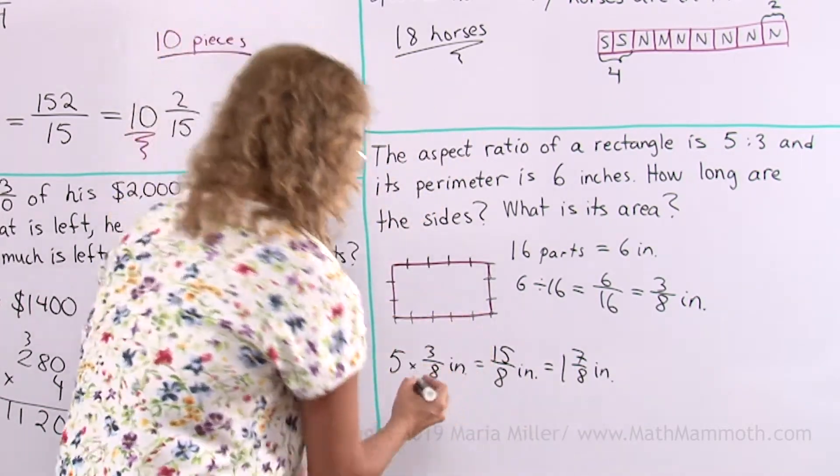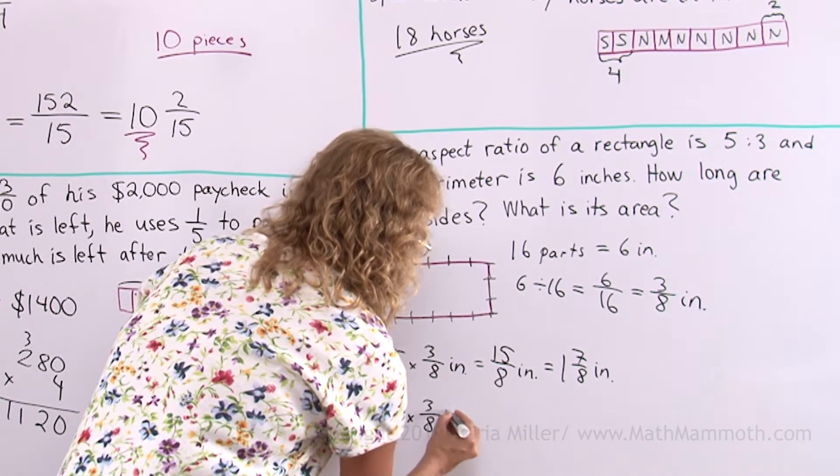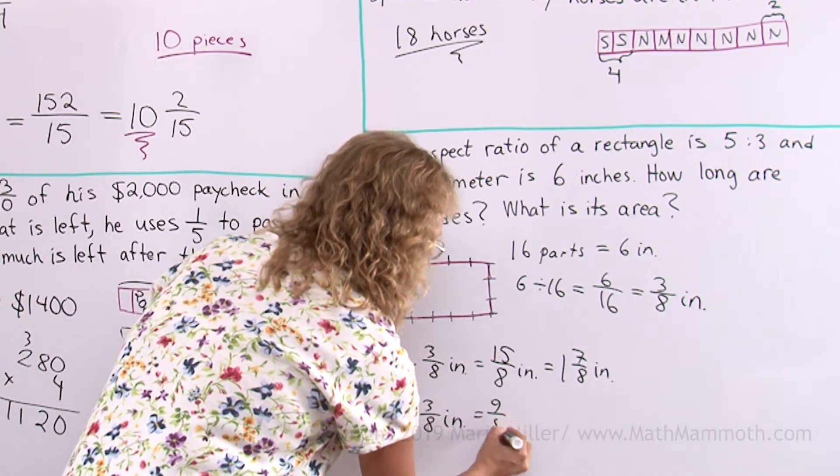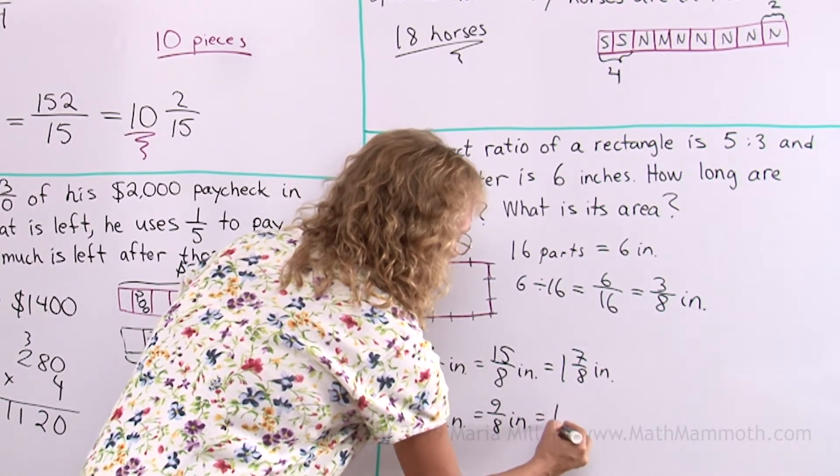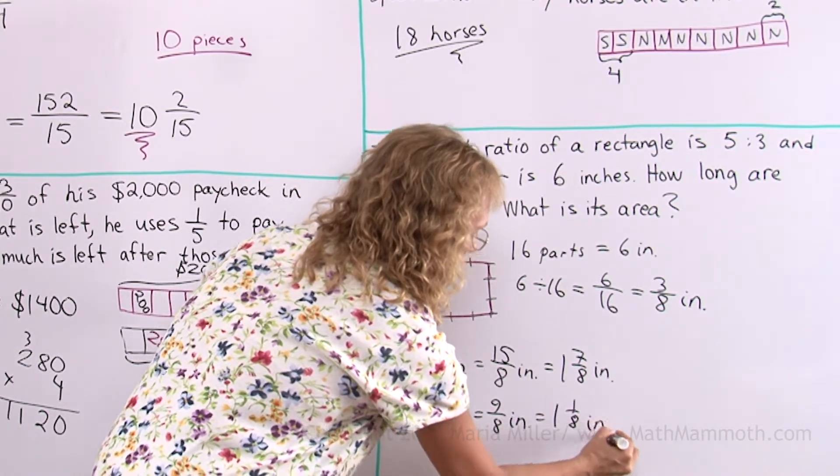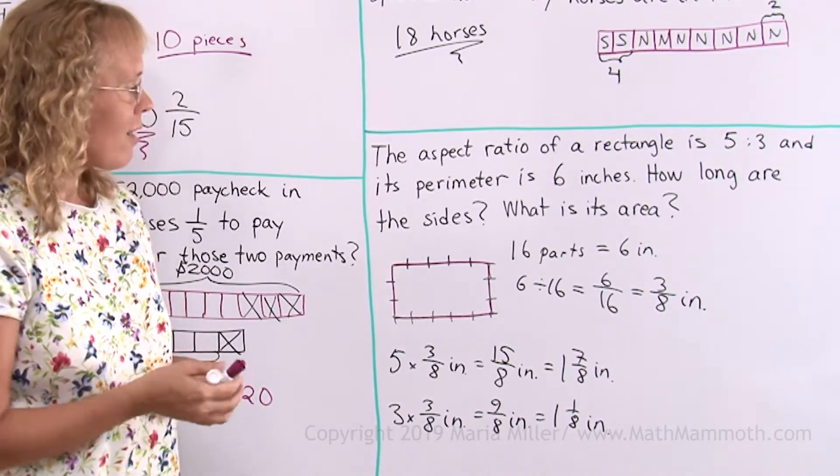And the other is here is 3 times 3 eighths of an inch. So we get 9 eighths of an inch, which is 1 and 1 eighth of an inch. So those are the side lengths. Now we go to the area.